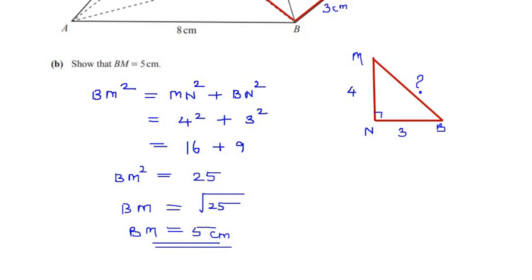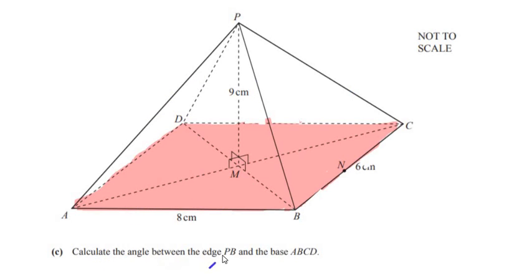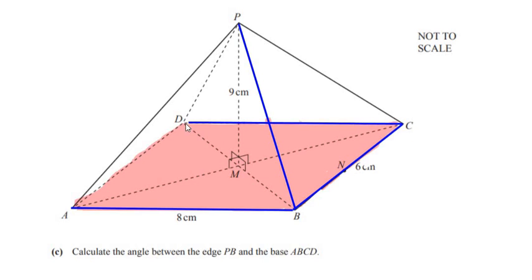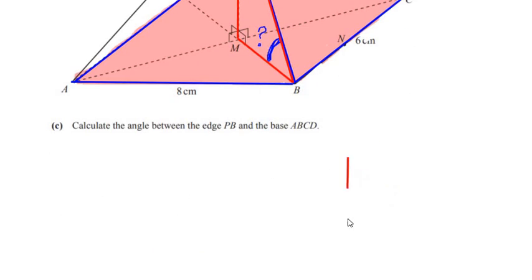Now let us look at the next part. Calculate the angle between the edge PB and the base ABCD. We need to find the angle made by line PB with the base — like a wall making an angle with the floor. To find this angle we take triangle PMB: P at the top, M at the right angle, and B at the base, with 90 degrees at M. PM was 9 and MB was 5 centimeters.